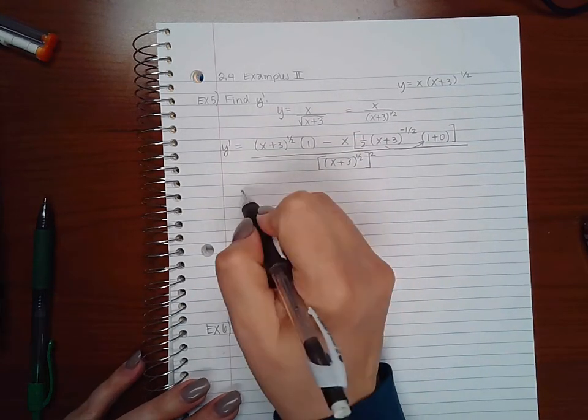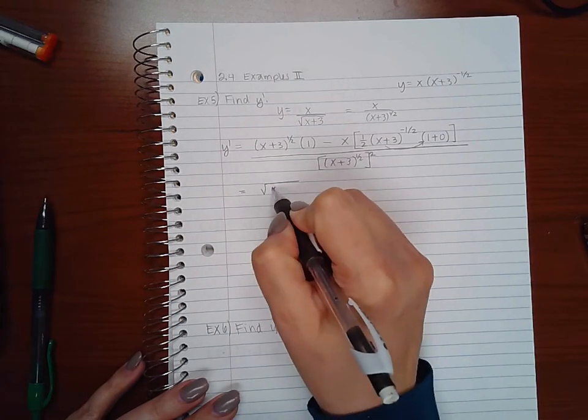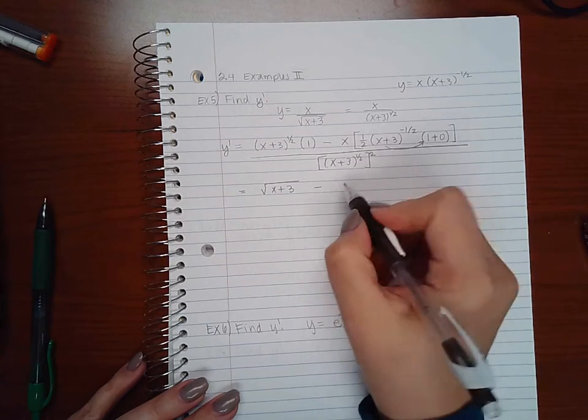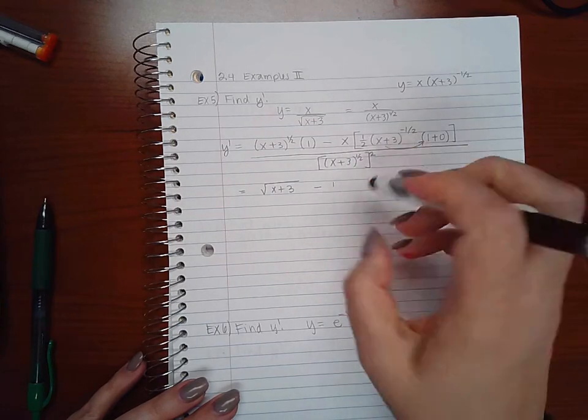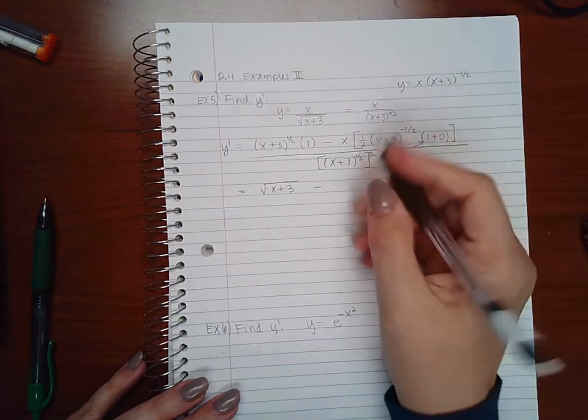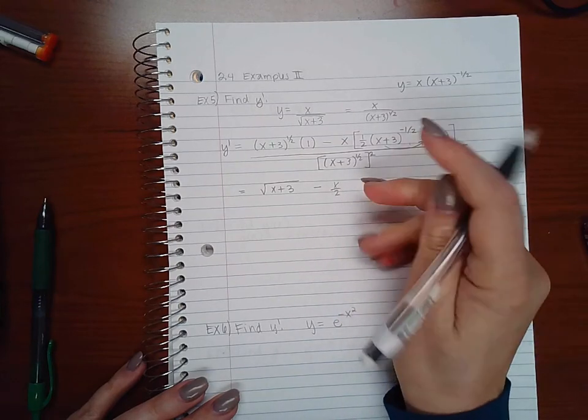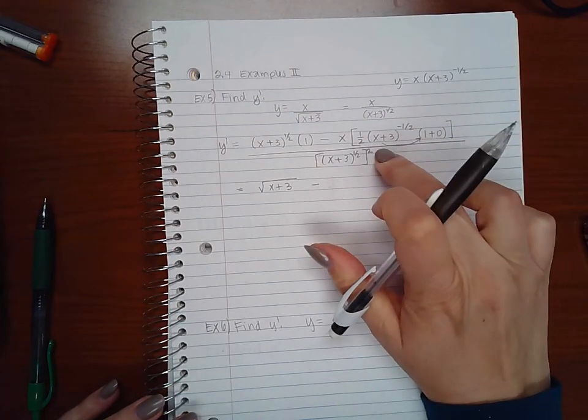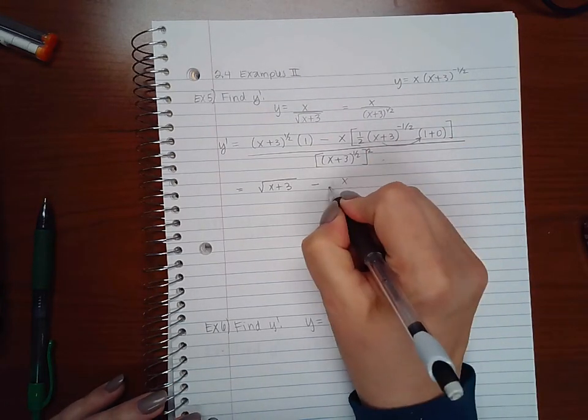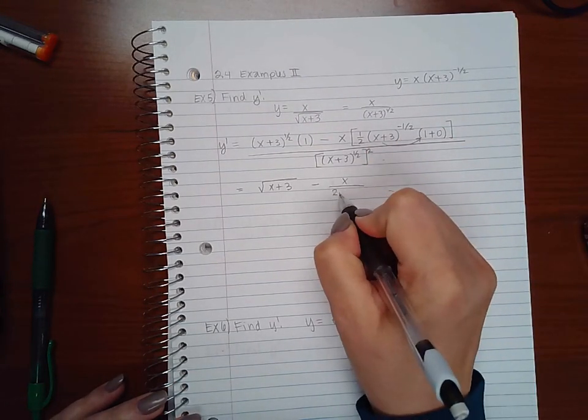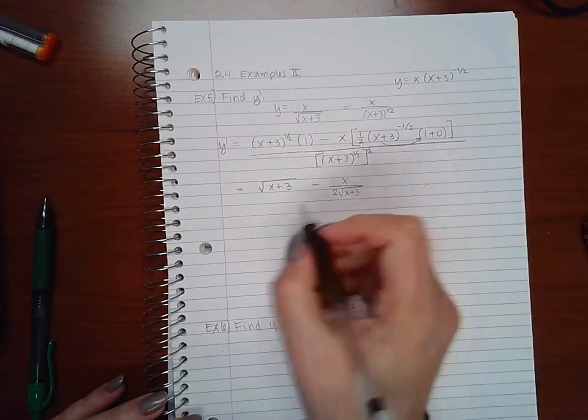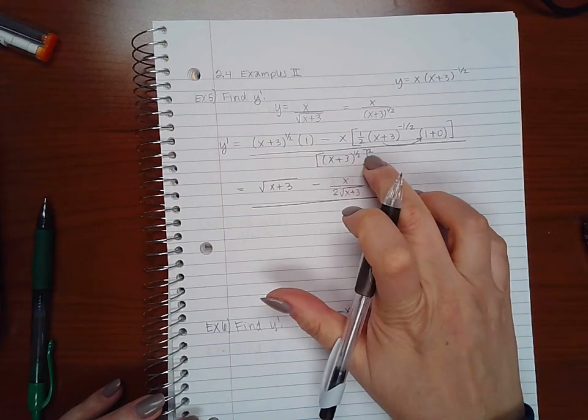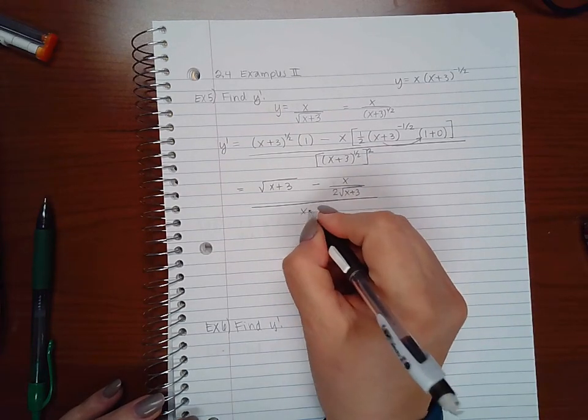So when I'm simplifying this, I will end up with the square root of (x+3) minus x over 2. Actually I end up with, because this square root will be downstairs as well, I end up with x over 2 square root of (x+3).